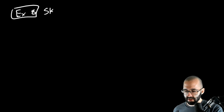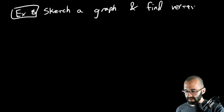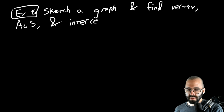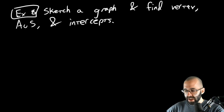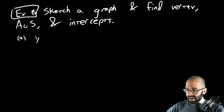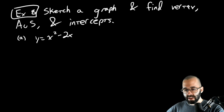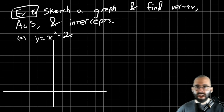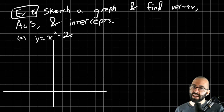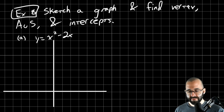Let's do one more example to finish this video — let's go the opposite direction with example eight: sketch a graph and find the vertex, the axis of symmetry, and the intercepts. You can always use Desmos to help, but I think you're at a point where you can do this by hand. Part a is y equals x squared minus 2x. Let's bring out our graph paper and get ready to sketch our graph. It's really good practice to do it all by hand, but you do have access to computers.